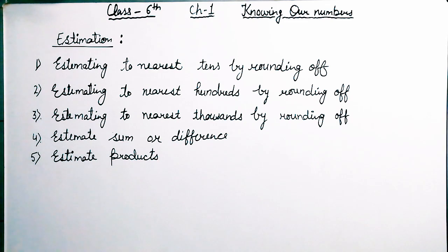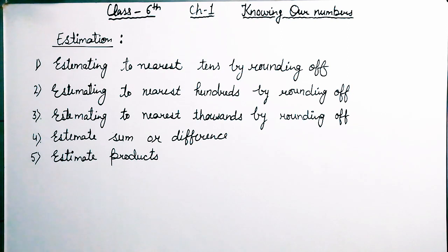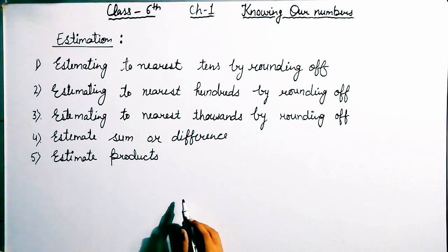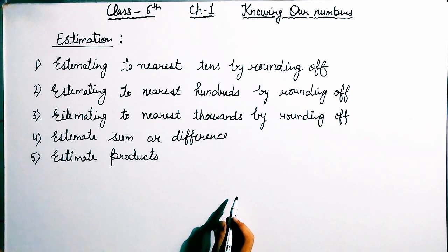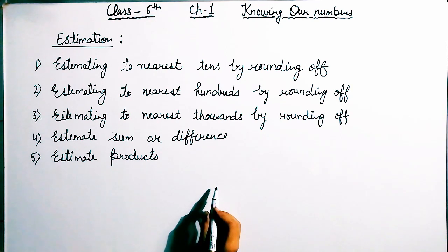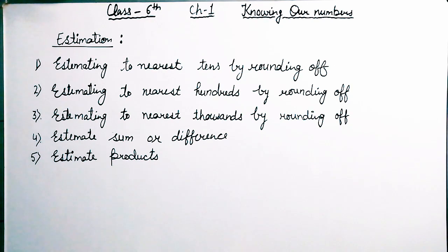Friends, our next part is our last part, that is estimation. There are five parts in this estimation. First we will start exercise 1.3, which relates to estimation. Estimation means to estimate — to approach or count approximately. There are five parts and I will explain them one by one, so make concentration and try to understand it properly.